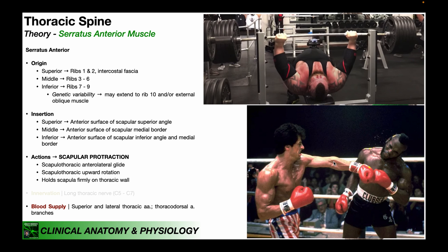The serratus anterior also participates in scapulothoracic upward rotation. This is utilized when abducting the shoulder joint — during glenohumeral abduction, it's not just the humerus that moves relative to the glenoid fossa; there must be a corresponding scapular upward rotation as well. Along with the upper and lower trapezius, the serratus anterior facilitates this scapulothoracic upward rotation.